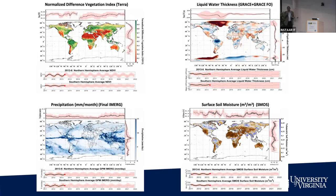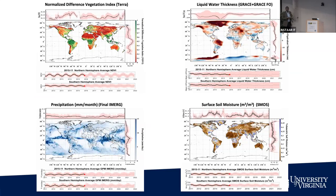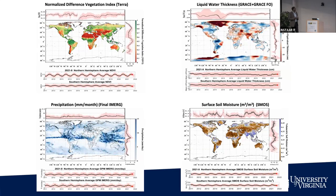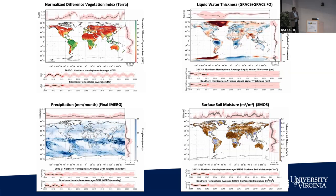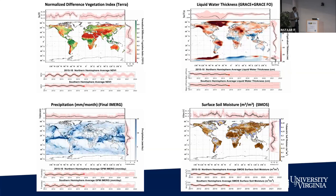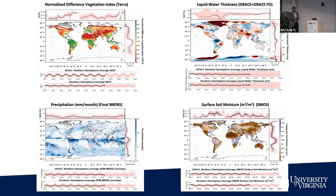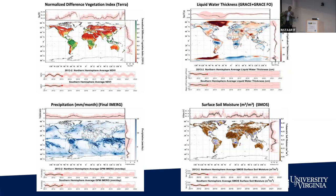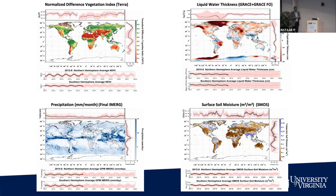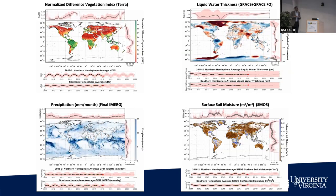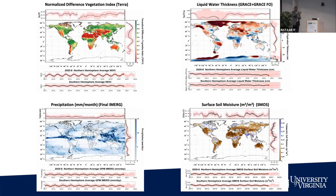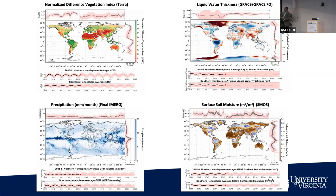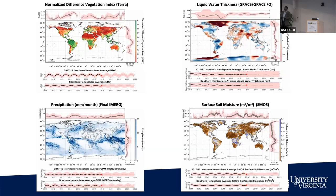If you look at this and create a nice movie, you see that the hydrological cycle makes sense. These are four quantities derived from four completely different sources: the Normalized Difference Vegetation Index from MODIS Terra, the liquid water thickness from GRACE, precipitation from the final IMERG run, and surface soil moisture from SMOS — a 10-year period. As it rains, especially in the middle of Africa, the ITCZ goes up and down, vegetation goes up and down, liquid water content increases and decreases, and soil moisture varies appropriately.